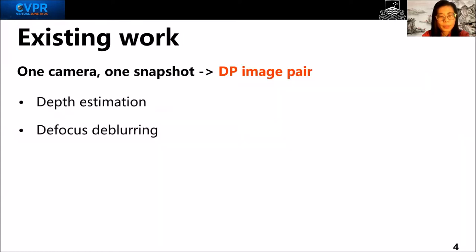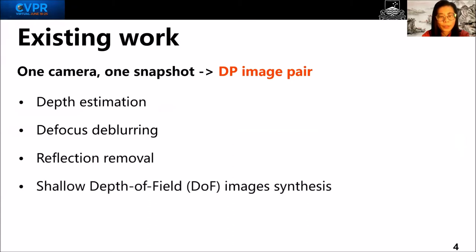Several works treat the DP pair as a stereo pair. Besides autofocus, it is used in depth estimation, defocus blurring, reflection removal, and shallow depth-of-field image synthesis.